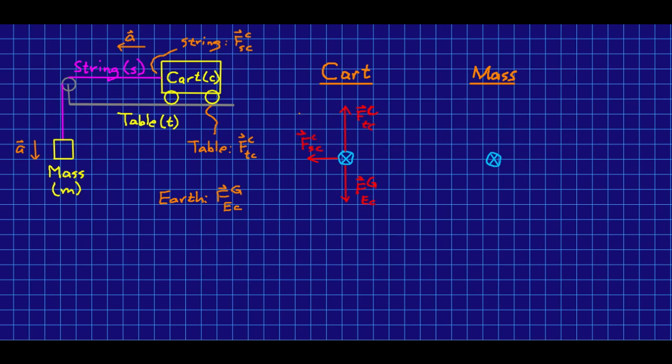And we already know that the cart accelerates left. Notice that I've made the string horizontal. If I hadn't, this force wouldn't be horizontal, but we certainly expect the vector sum of forces on the cart to be horizontal. And so if this force wasn't horizontal,